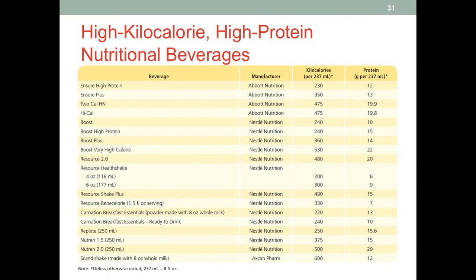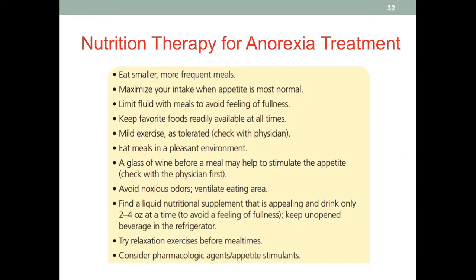For example, Abbott makes Ensure, or there's Boost by Nestlé. This is a good summary to reference, and those companies also have free apps or online product information we can refer to. Here we have nutrition therapy for anorexia in the context of cancer treatment, though these strategies can also be very useful for other types of anorexia.